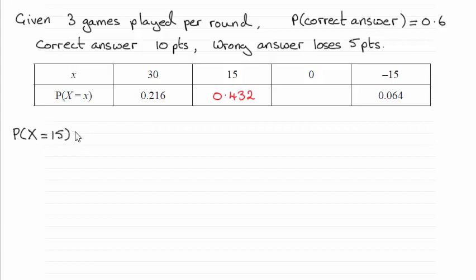One such combination would be to win the first two games — that would be 10 points and another 10 points, a total of 20 points — and then lose the next game. So we would subtract 5 points from the 20 points total, and that gives us 15.